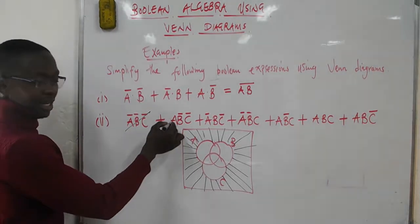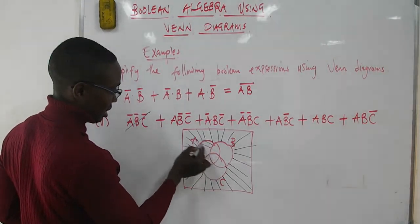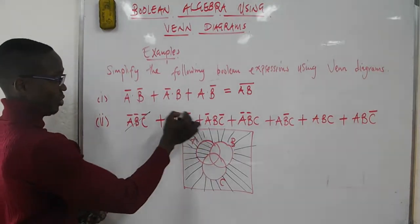Next, we have A(BC)̅, which means inside A but outside the union of B and C - this region here.